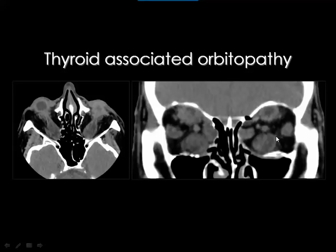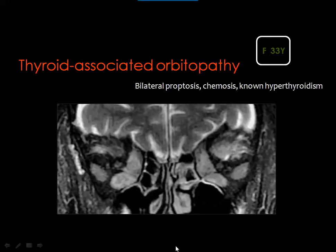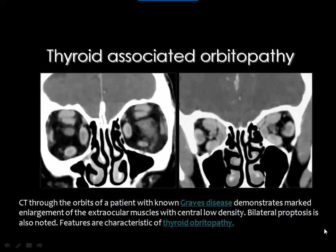In Graves' disease you can see the lateral and medial recti, inferior rectus, and superior rectus levator complex all involved. MRI T2 coronal images show Graves' disease affecting medial, inferior, lateral, and superior recti on both sides. Also known as thyroid orbitopathy, Graves' disease involves most muscles; the least commonly affected is the lateral rectus muscle. The inferior rectus tends to be most affected.